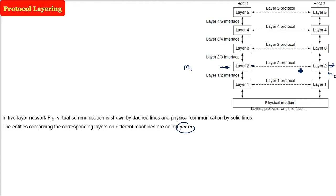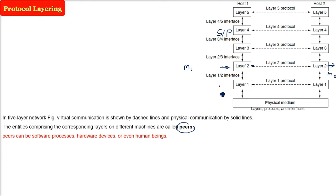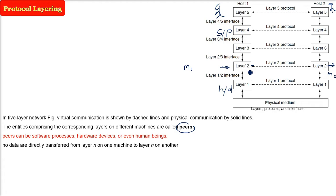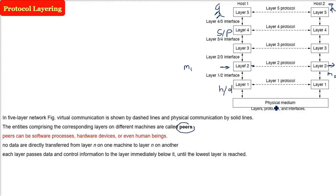Peers can be software processes, hardware devices, or even human beings - mostly at the application layer. No data is transferred directly from layer to layer horizontally - each layer passes data and control information to the layer immediately below it, until it reaches the lowest layer and finally the physical medium.